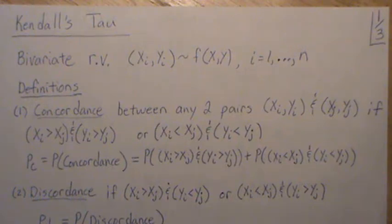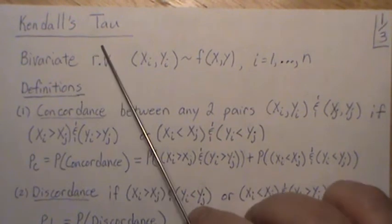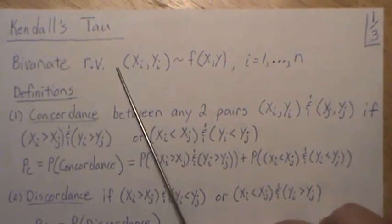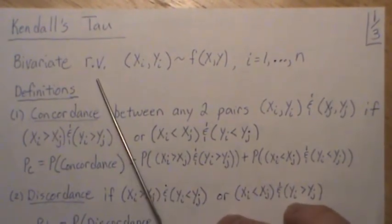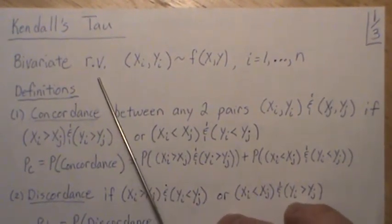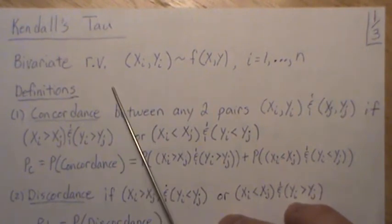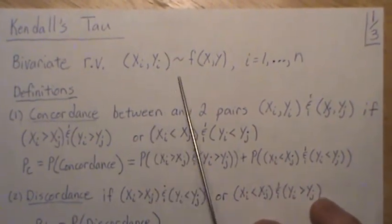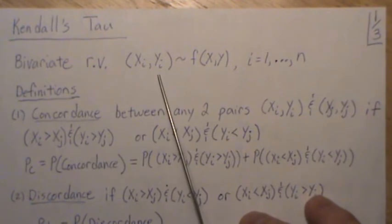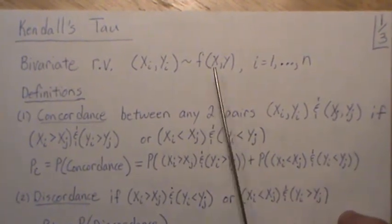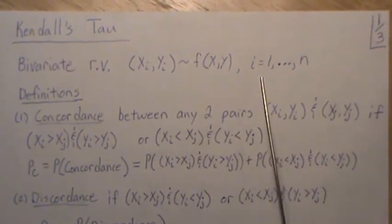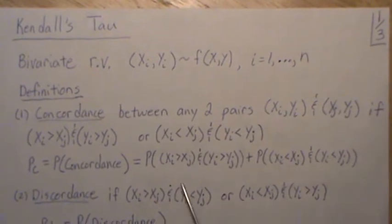Hello, this is the next video on a playlist I'm calling 'Correlation.' I'm also going to put this in a playlist called 'Non-Parametric.' Here we're going to look at Kendall's tau, which is a non-parametric measure of association between two variables. We assume we have an X and a Y — some sort of bivariate relationship following some distribution — and we have a sample size n.